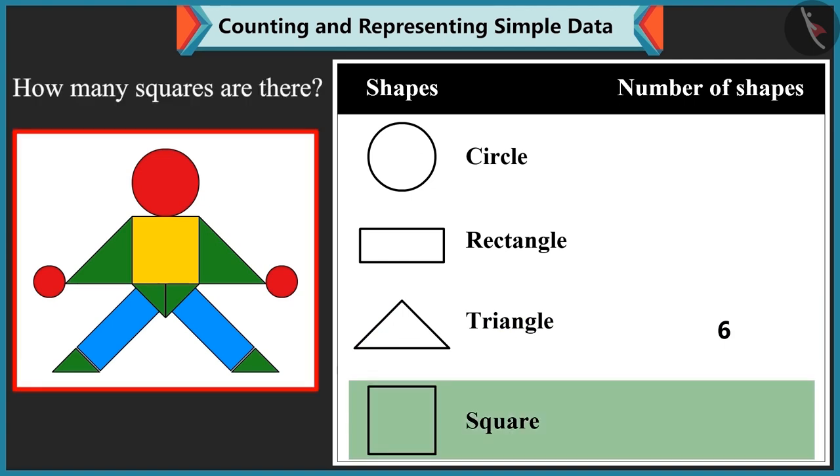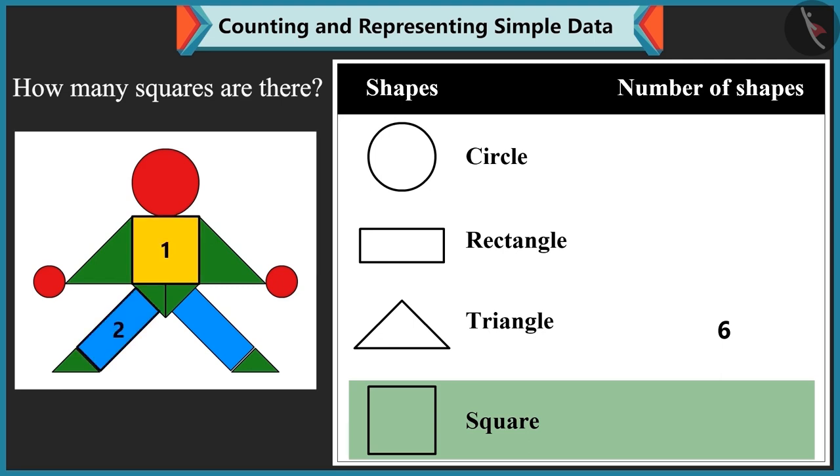Well done. Now tell me, how many squares are there? 1, 2, 3. Oh, oh, oh, no, Bubbly. There is only one square here.